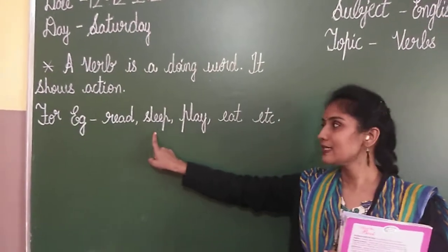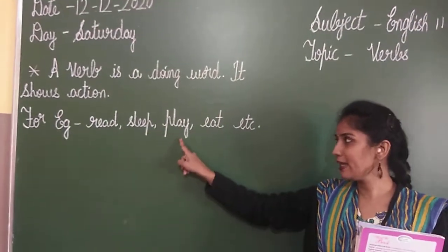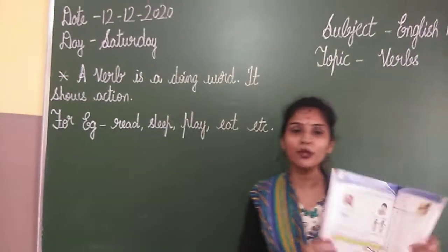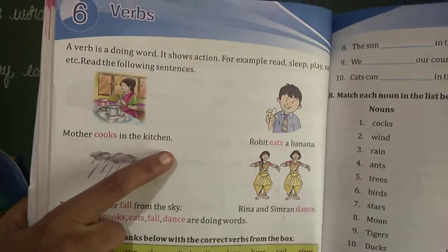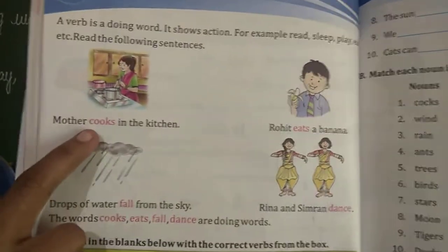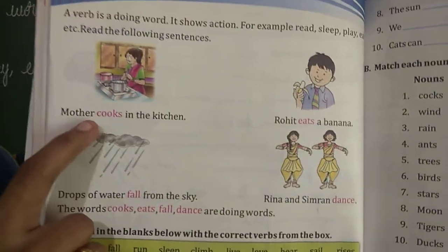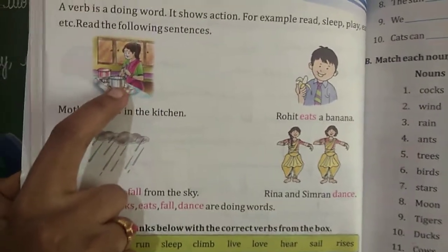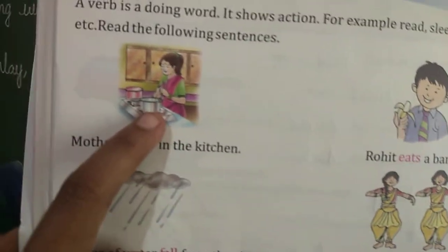There are some more examples in your textbook. You can take out your textbook, children. Can you see here? Mother cooks in the kitchen. So what is mother doing here? Cooks. Can you see she is doing an action? Here, the action word is what we call a verb.